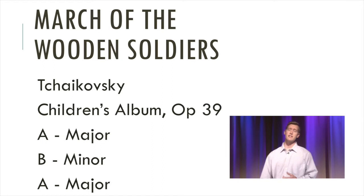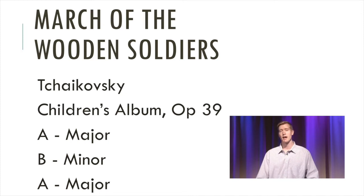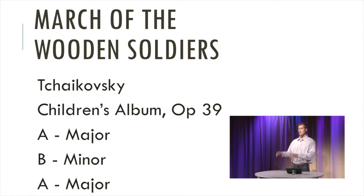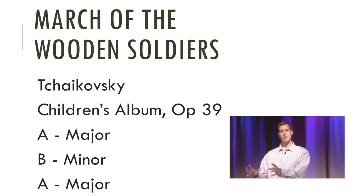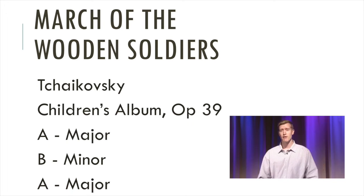So let's look at an example. This is a piece by Tchaikovsky — you might recognize his name because he wrote The Nutcracker. This is a really short piano piece called March of the Wooden Soldiers. The way they change the B section: it goes major for A, then to minor, and then back to major. And this is a short piece — it's only 45 seconds.